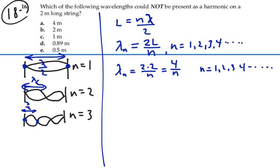If we start plugging in numbers, the possibilities are: if n equals one, four; if n equals two, two; if n equals three, one point three three; if n equals four, one.